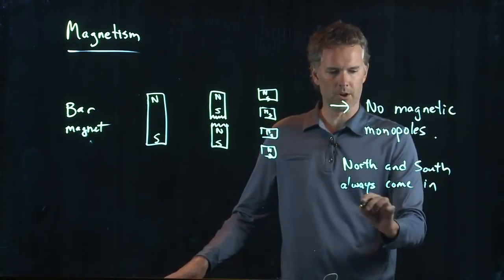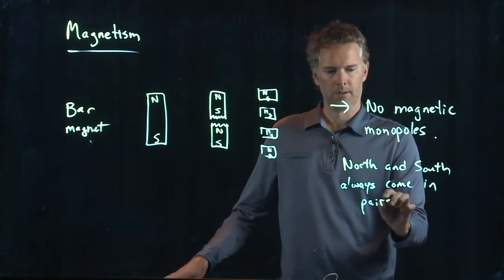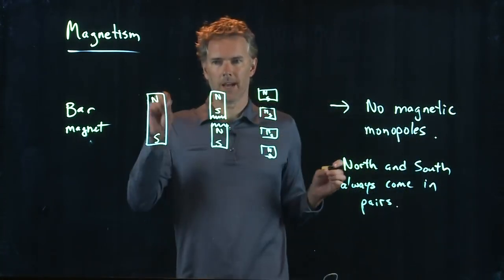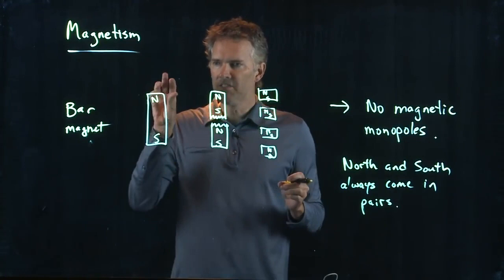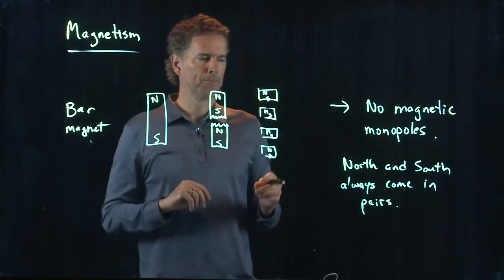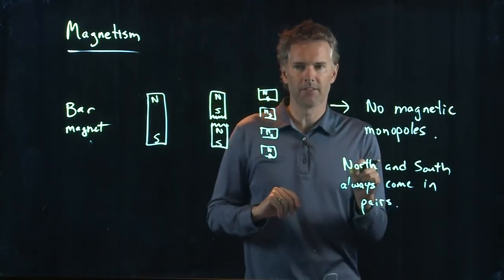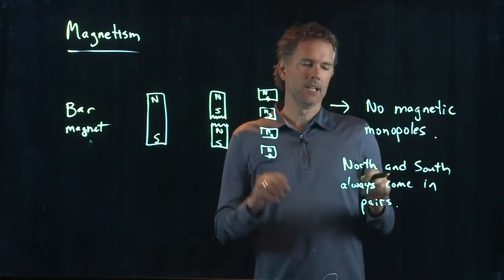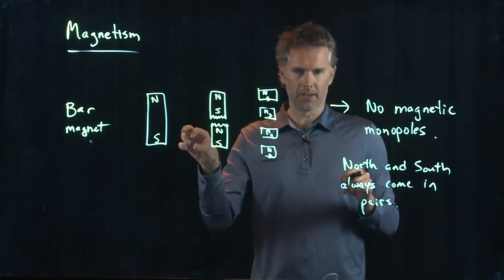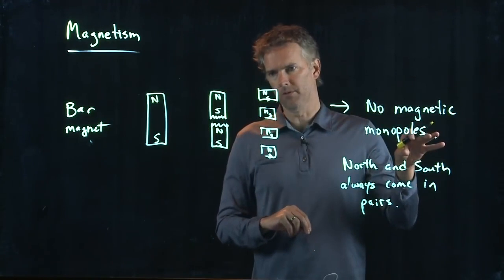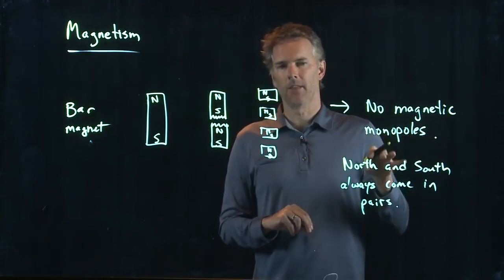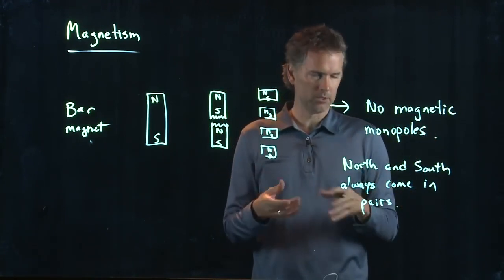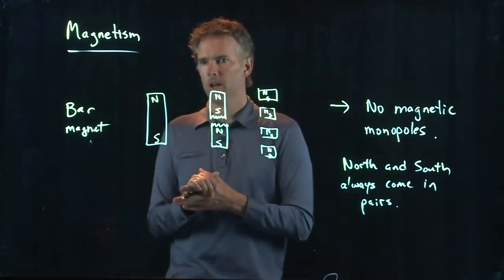And this is very different than charge. When we talked about charge, you can have a positive charge sitting all by itself, a proton. You can have an electron sitting all by itself. But you can't have a north pole just sitting all by itself or a south pole sitting all by itself.